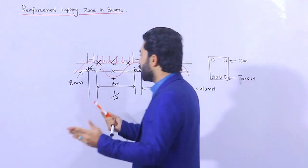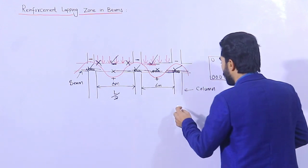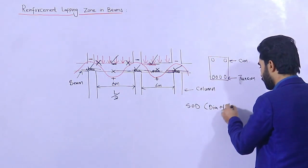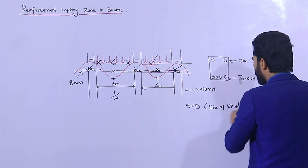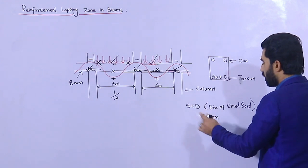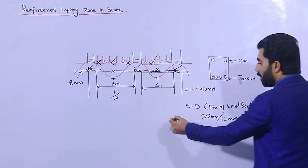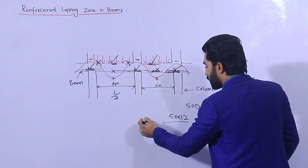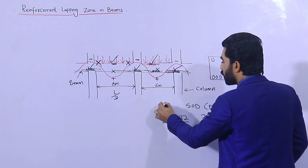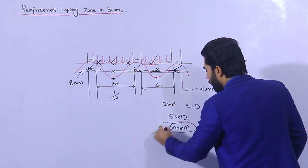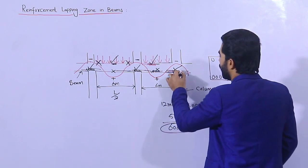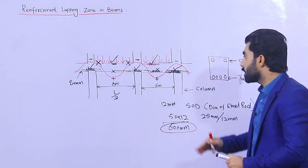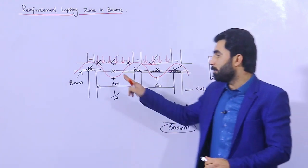Now, what should be the length of lapping? The lapping length should not be less than 50d in a beam, where d is the diameter of the steel rod. Suppose the diameter is 12 mm — so 50 multiplied by 12 gives you about 600 mm. So for a 12 mm diameter bar, you can take the lapping length as 600 mm. You can make the lapping length 600 mm whether it is at the bottom portion or top portion, but the lapping length should not be less than 50d.